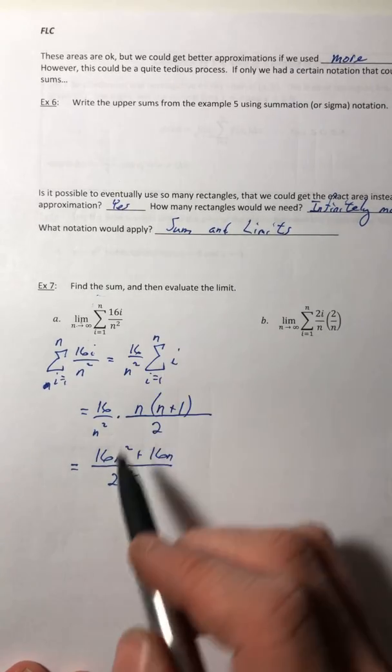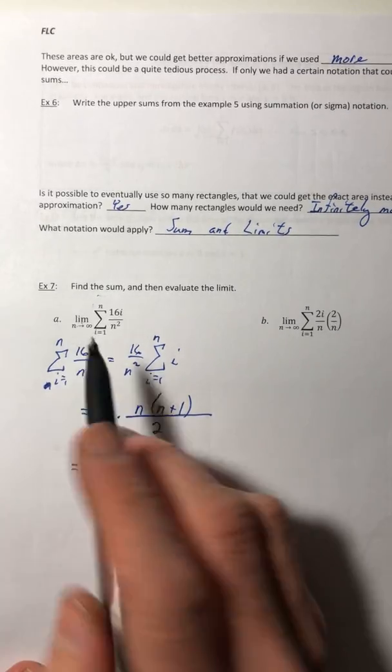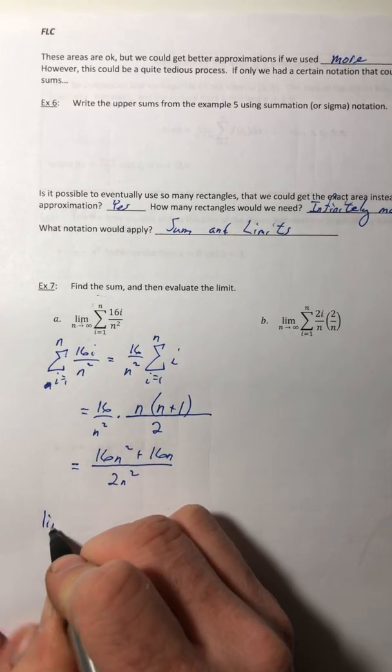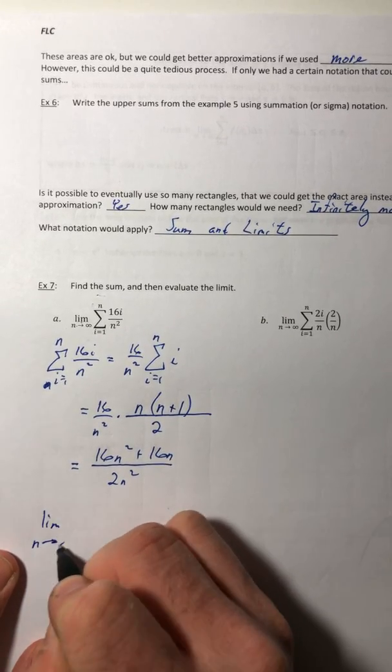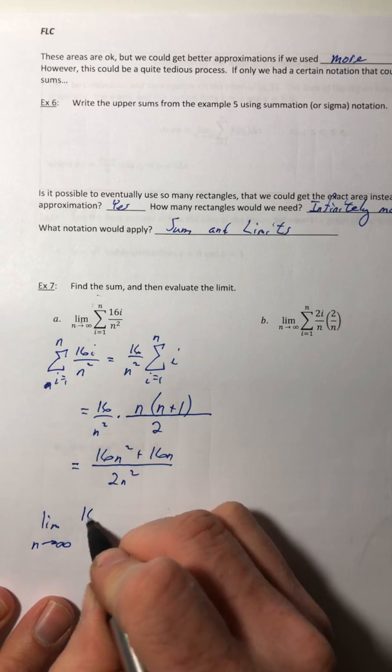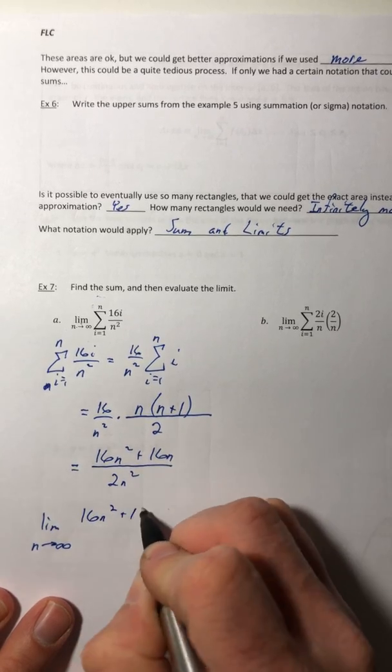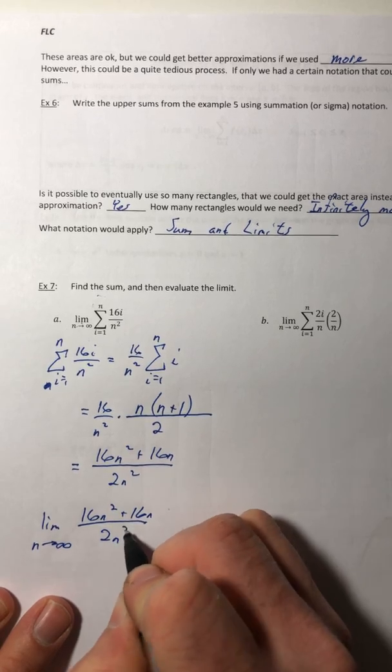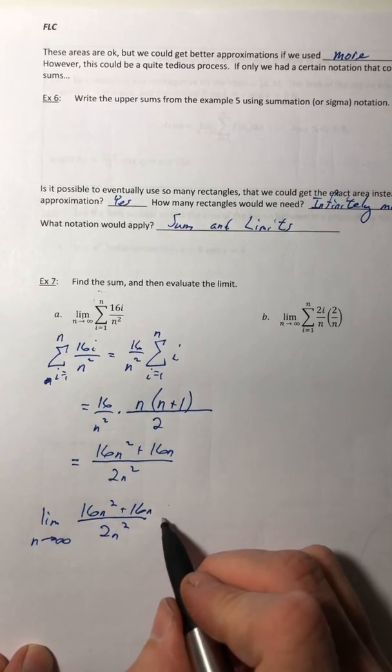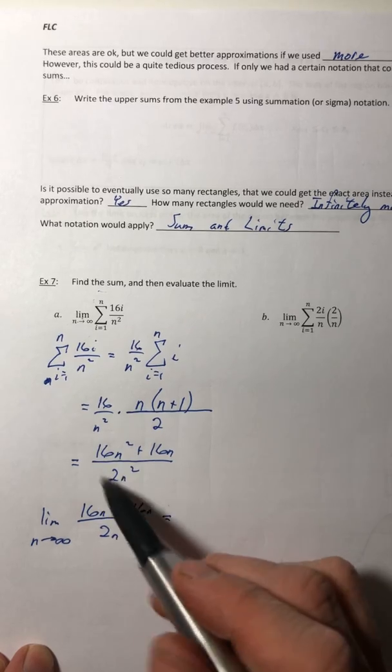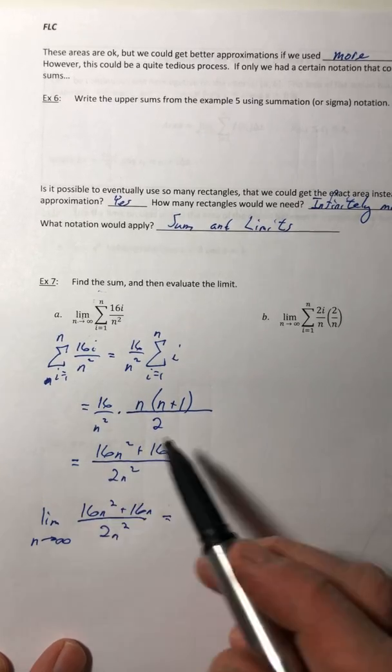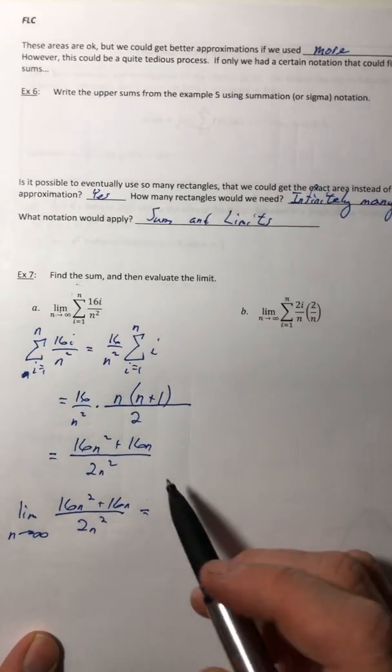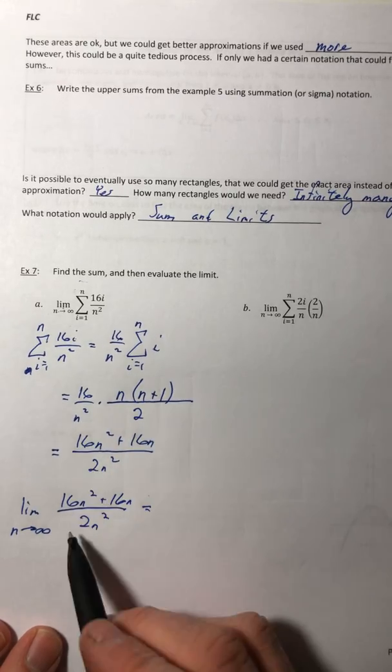Now that you have the sum, now you can do the limit of that result. Once you do the limit, that's when you can really worry about trying to reduce it. Otherwise, some people just get stuck. They want to reduce and then try to do the limit and things start to happen.